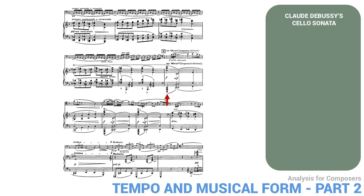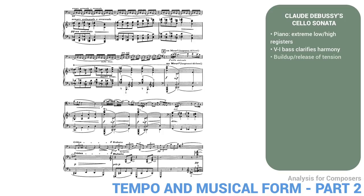At this point, the high point of the climax, the piano reaches its extreme low and high registers. The 5-1 bass clarifies the harmonic direction after several low A's. Combined with the cello line, rising at last toward its peak, the harmony also creates a potent build-up and release of tension. The climax consists of two waves of two bars each, starting at rehearsal number two. The cello brings back motives A and B from the start, and then, ornamenting the same idea in the second wave, moves into 32nd notes.